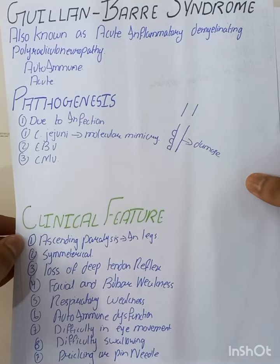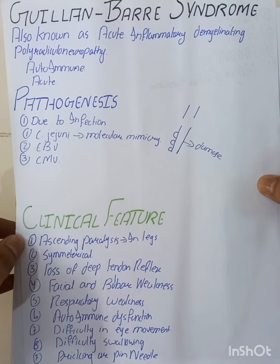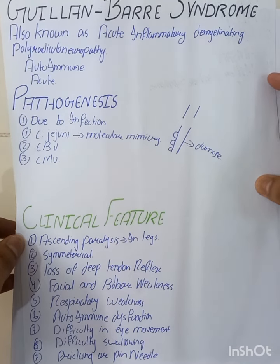The clinical features of Guillain-Barré syndrome follow a special pattern. There is ascending paralysis, which initiates from the legs and moves toward the arms, in a symmetrical pattern — both legs and both arms are involved. There is also loss of deep tendon reflexes, because this is a lower motor neuron lesion involving the peripheral nerves.